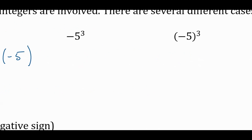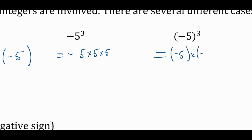Same idea with the cubed example. For the first one: negative five times five times five, and the next one: negative five times negative five times negative five. Does anybody know what five times five times five is? 125. The first one has one negative, so the result will be negative 125. With three negatives, the result is also negative — negative 125. So what's the rule we can develop here to know when the result of an exponent is going to be negative versus positive?